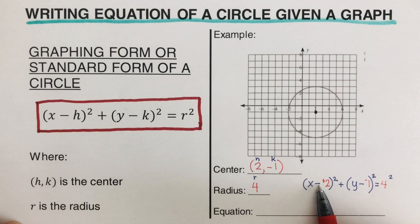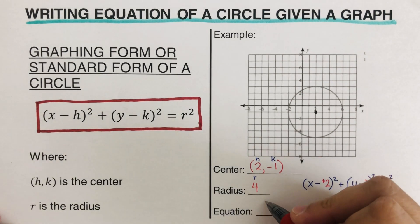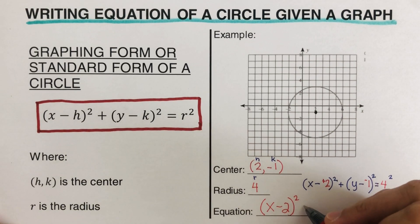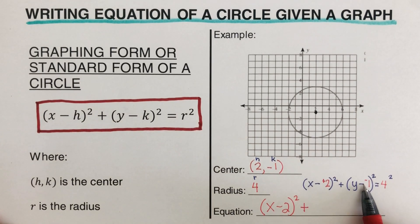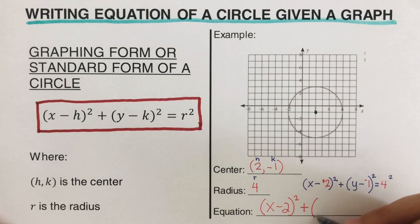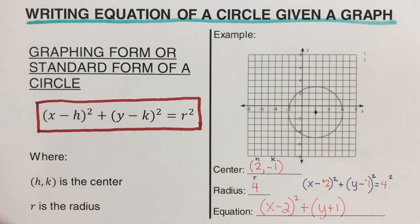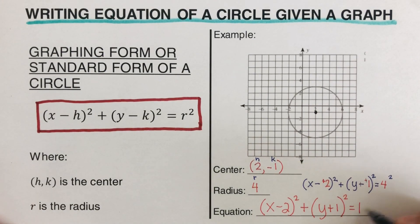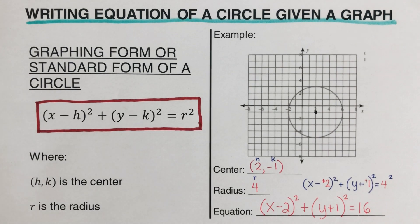Now we simplify. A minus and a positive gives a negative, so we write x minus 2, squared. A plus and a negative gives a positive, so we write y plus 1, squared. That equals 4 squared, which is 16. So the final equation is: (x - 2)² + (y + 1)² = 16.